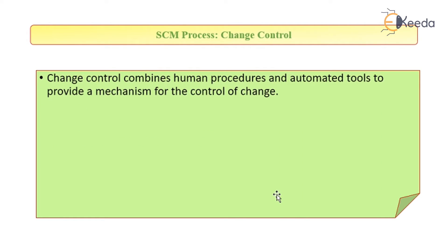Change control. Change is inevitable. During the software development lifecycle, there can be change in requirements, change in technical feasibility, change in government policies, and change in capital. All of these changes will lead to change in the software development. It combines human procedures and automated tools to provide a mechanism for control of change.